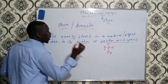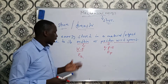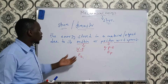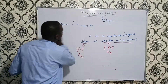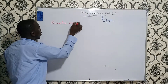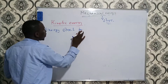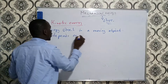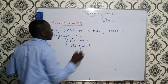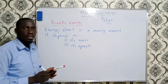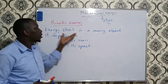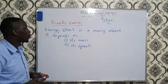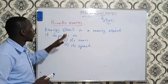We can use EK for kinetic energy. I want us to look at kinetic energy and GPE in detail, so let's start with kinetic energy. The kinetic energy of an object is defined as the energy stored in that moving object, and it depends on its mass and its speed.